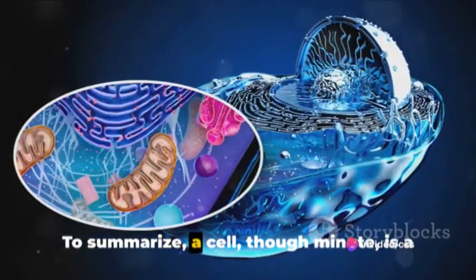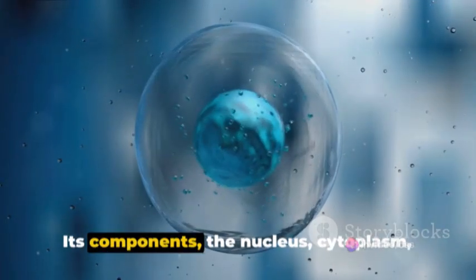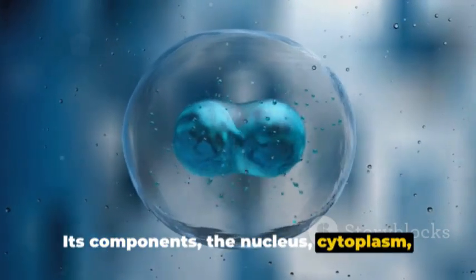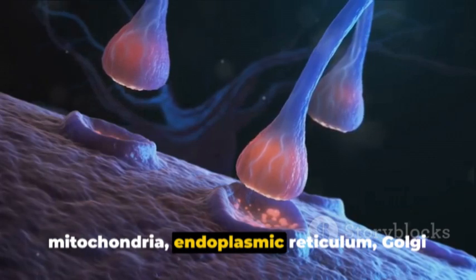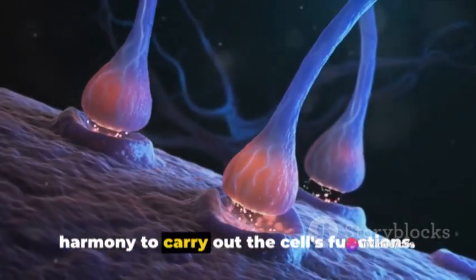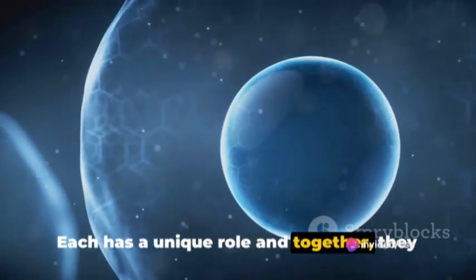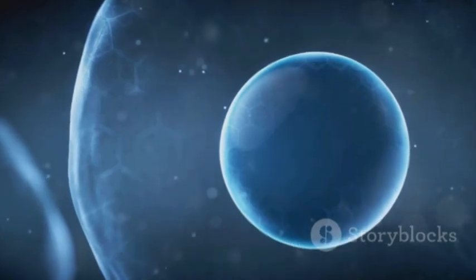To summarize, a cell, though minute, is a complex structure. Its components—the nucleus, cytoplasm, mitochondria, endoplasmic reticulum, Golgi apparatus and cell membrane—work in harmony to carry out the cell's functions. Each has a unique role and together they maintain the life of the cell.